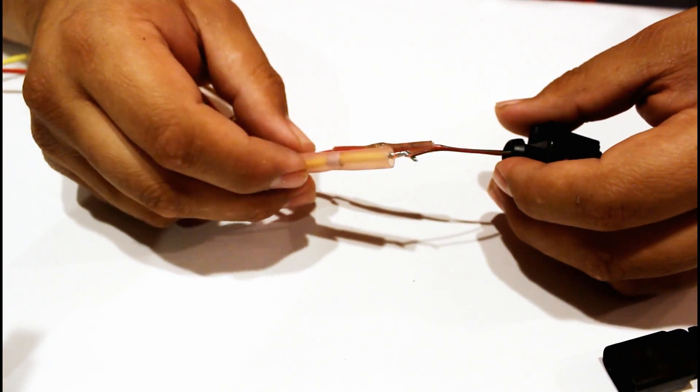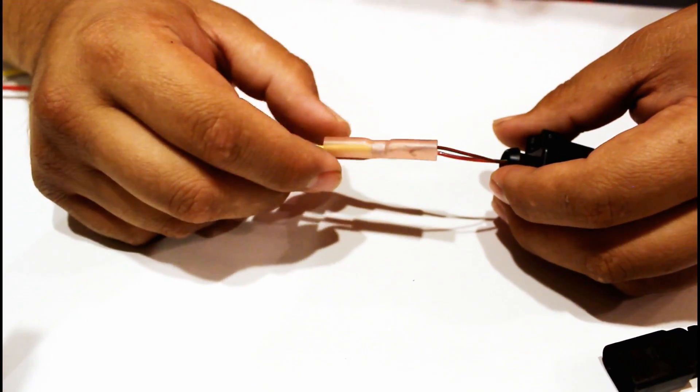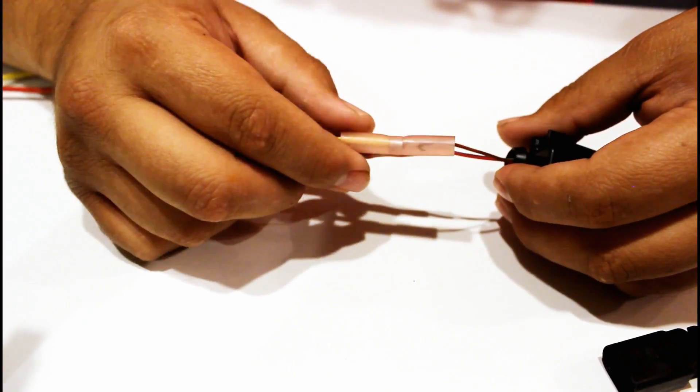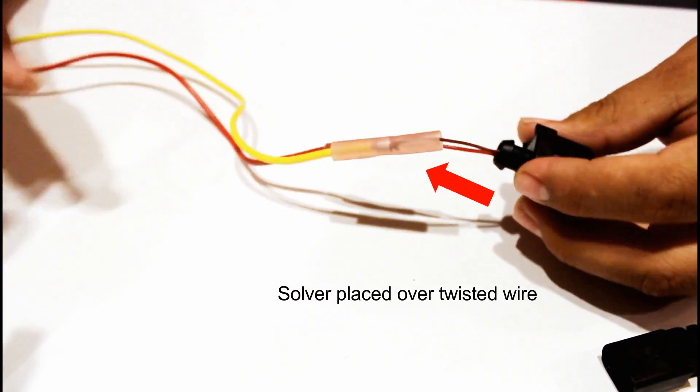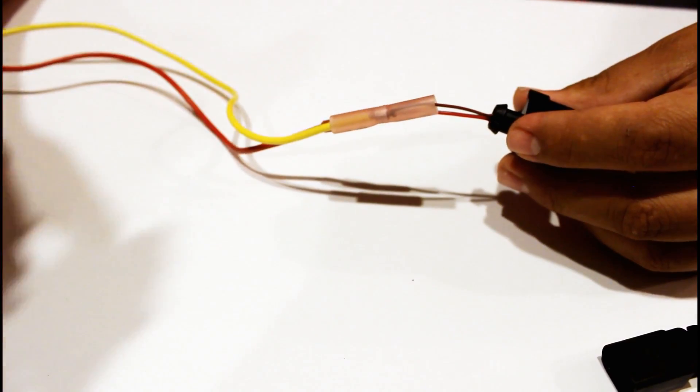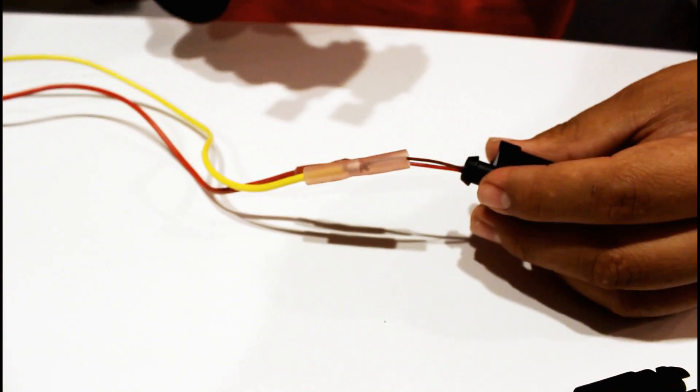Now we're going to take our sleeve and slip it over. We're going to let the solder rest exactly over the connection. Like so. And what we're going to do is take our torch and turn it down to the lowest setting.